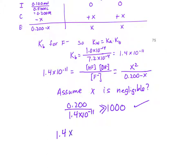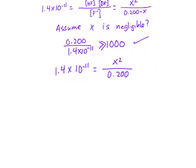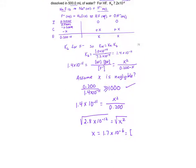So that simplifies our equation to 1.4 times 10 to the minus 11 equals X squared divided by 0.2. If we multiply both sides by 0.2 we get 2.8 times 10 to the minus 12 is equal to X squared. Take the square root of both sides and we'll find that X is equal to 1.7 times 10 to the minus 6, and this is equal to our OH minus concentration and our HF concentration from the ICE table.